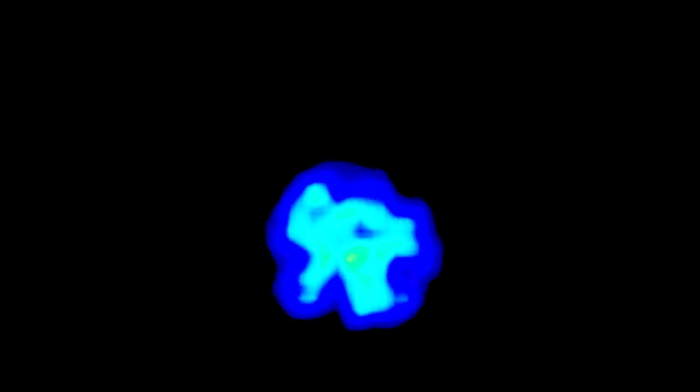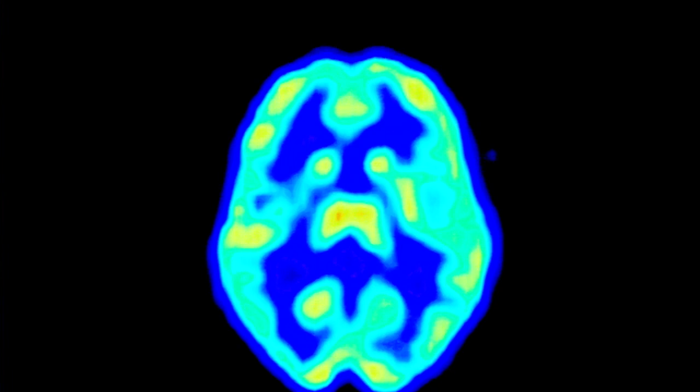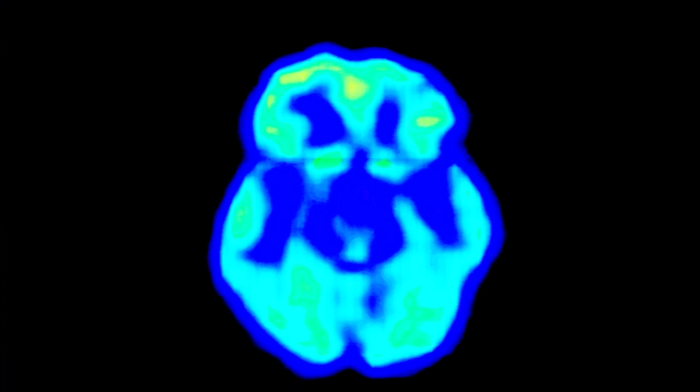Thanks to these technological developments, we can now see what happens in the brain during certain activities, like recalling events from infancy, memorizing a number, doing a simple mental calculation, imagining a familiar scene, remembering a face, or experiencing sensations while looking at a photograph.